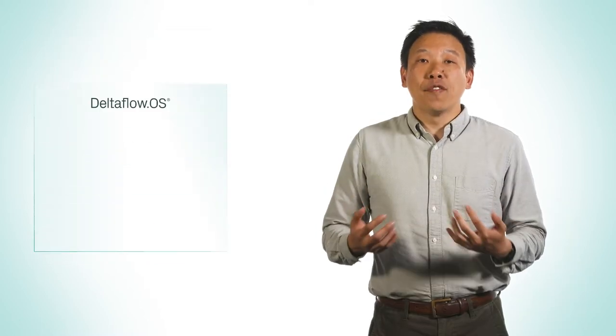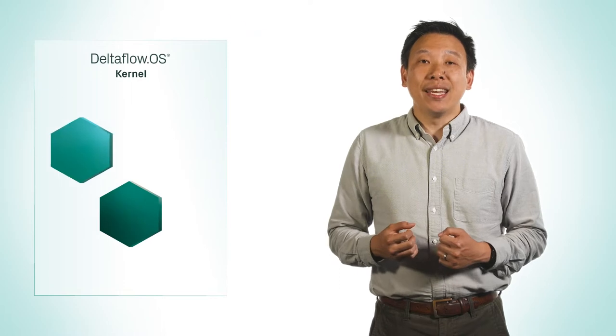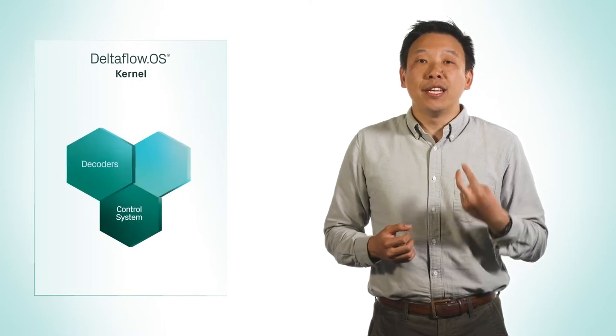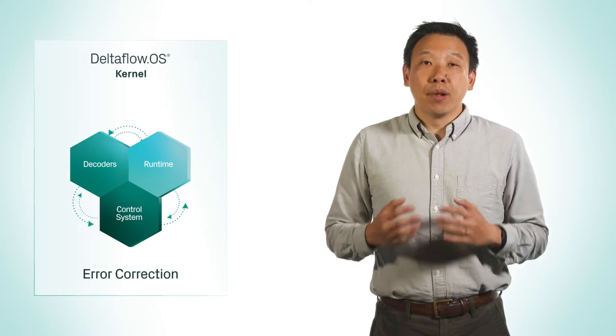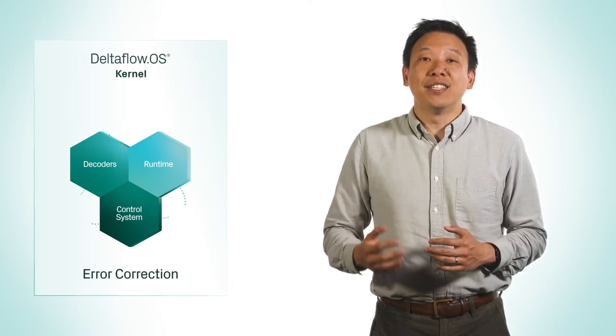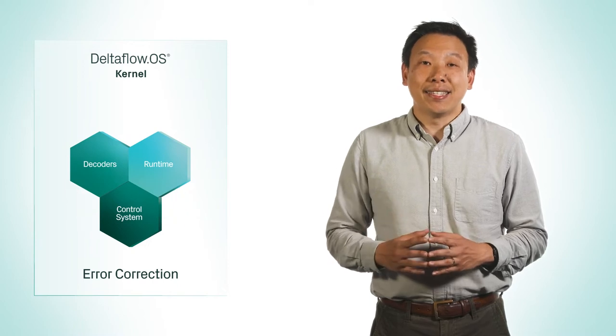Behind the scenes, the kernel of the operating system, made up of three key elements—a control system, decoders, and a runtime system—repeatedly performs the complex calculations and issues the instructions that are needed to detect and correct errors as they occur.